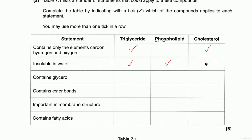Contains glycerol — all triglycerides will, and phospholipids, but not cholesterol. Ester bonds — definitely in triglycerides and phospholipids. Remember that both triglycerides and phospholipids are made up of glycerol and fatty acids; cholesterol doesn't have that structure. Important in membrane structure — definitely phospholipids and cholesterol. Contains fatty acids — just those two.